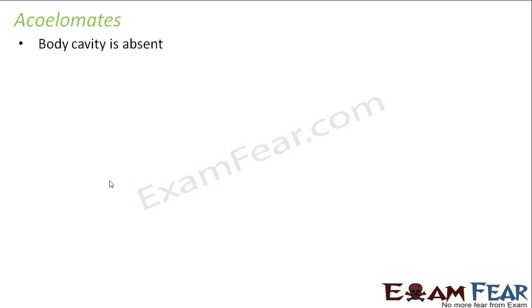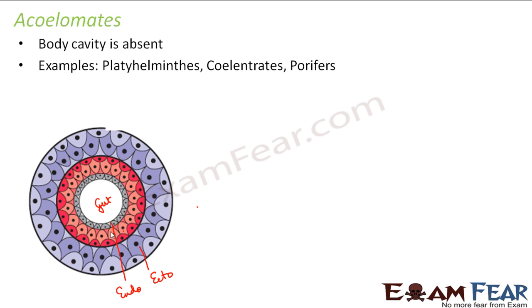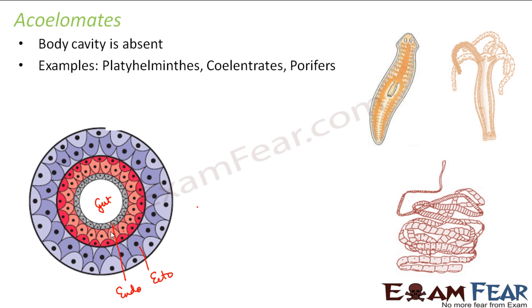In acoelomates, the body cavity is completely absent — there is no coelom at all. Between the ectoderm and endoderm, there is no open space. You have ectoderm, then immediately mesoderm, then immediately endoderm — no open space between the gut wall and the body wall. The mesodermal tissue present between the gut and the body wall holds the organs in place. Examples of acoelomates include platyhelminthes, cnidarians, and porifera.